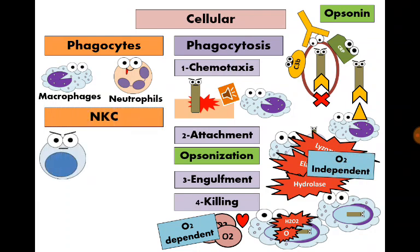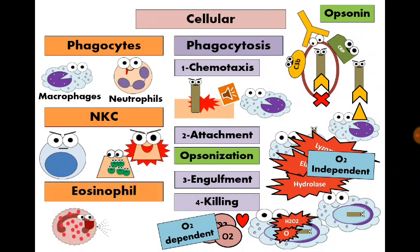We have two other innate cells: the natural killer cell and the eosinophil. The natural killer cell kills abnormal cells — either virus-infected cells or tumor cells — by producing pores in them causing osmotic lysis, or by triggering cell apoptosis. The eosinophil acts mainly against helminths, secreting toxic products onto them to digest their walls.